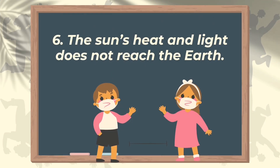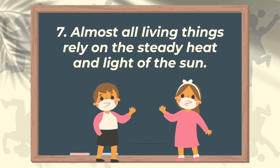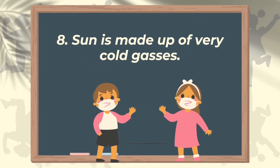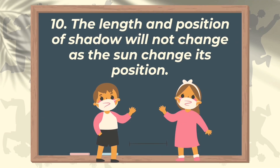Number 6: The sun's heat and light does not reach the earth. The correct answer is false. Number 7: Almost all living things rely on the steady heat and light of the sun. The correct answer is true. Number 8: The sun is made up of very cold gases. The correct answer is false. Number 9: When light rays cannot pass through an object, there is a formation of shadow. The answer is true. Number 10: The length and position of shadow will not change as the sun changes its position. The correct answer is false — the sun's position affects shadow formation.